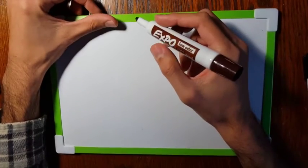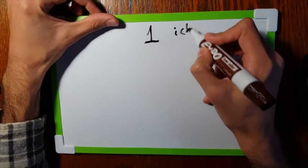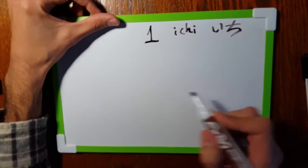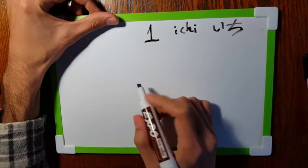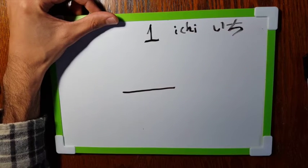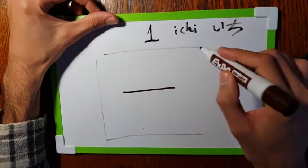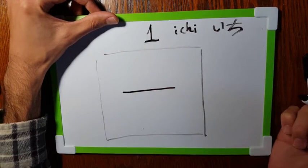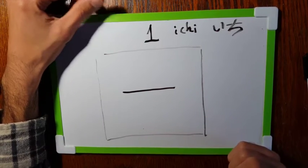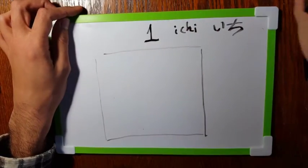Let's start with number one. That's ichi in hiragana. Basically it's just one stroke, a horizontal line. Let me situate myself within a square here. So just that's one, ichi. One more time.